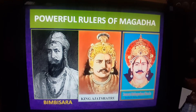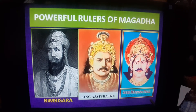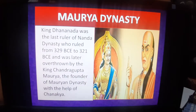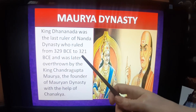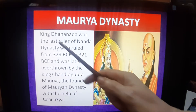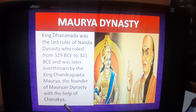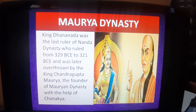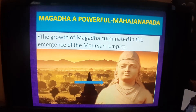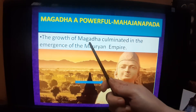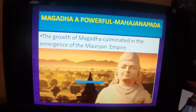Another element of this Mahajanapada was its powerful rulers like Bimbisara, Ajatashatru, and Mahapadmananda. Before the Maurya dynasty, the Nanda dynasty ruled Magadha from 329 BC to 321 BC, and the last ruler of the Nanda dynasty was Dhanananda. He was overthrown by Chandragupta Maurya, who founded the Maurya dynasty with the help of Chanakya in 321 BCE — BCE meaning Before Common Era. During the Maurya Empire, Magadha became the most powerful Mahajanapada, culminating in the highest development of the empire.